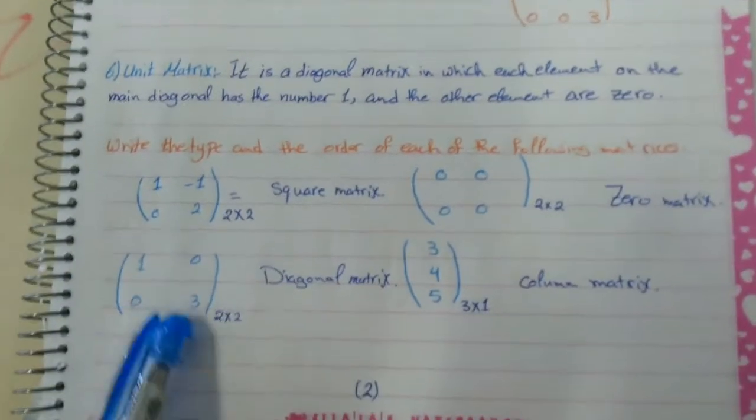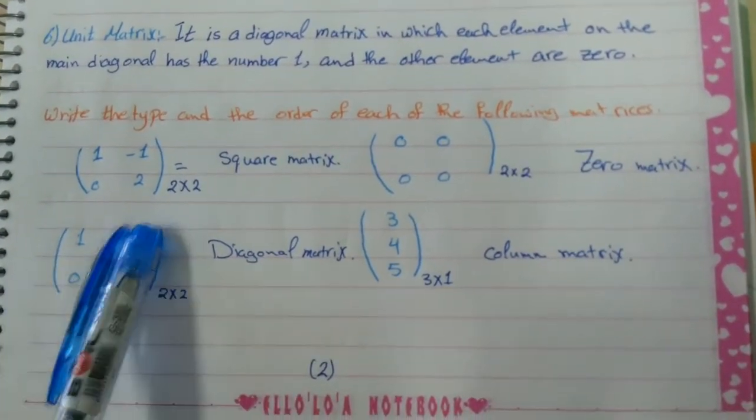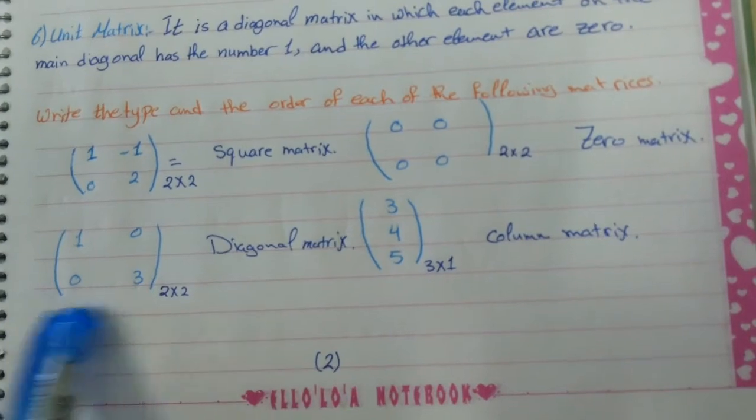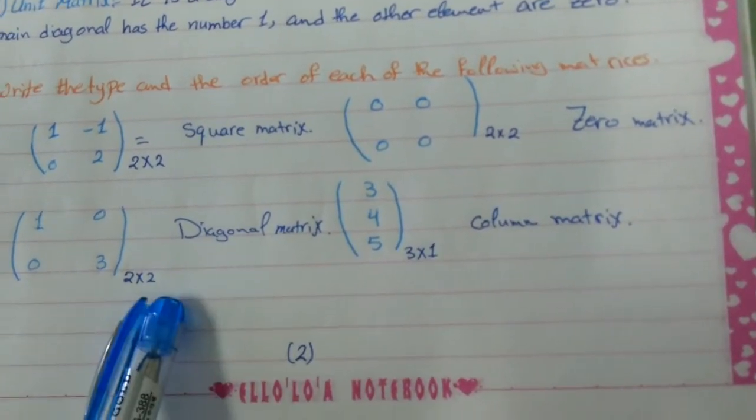Here, you have only the diagonals have numbers. Here is zero, the elements. So this is called diagonal matrix, 2 times 2.